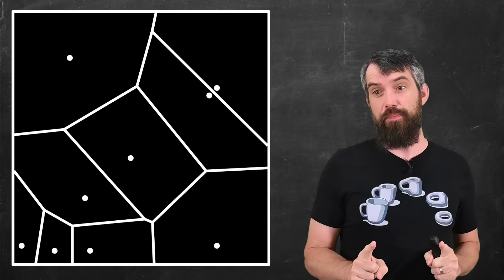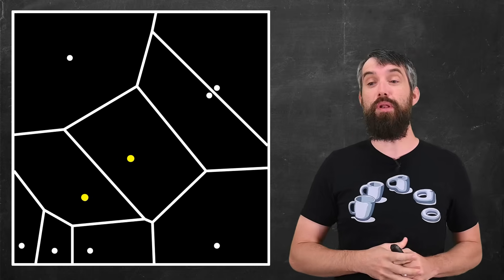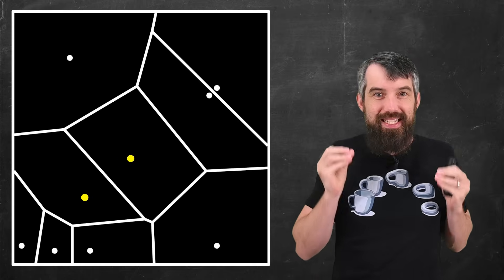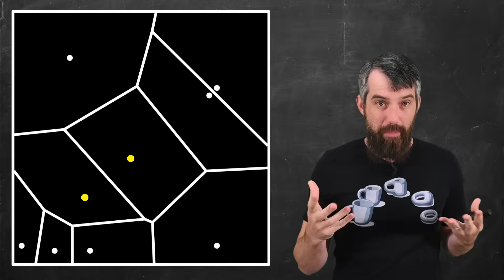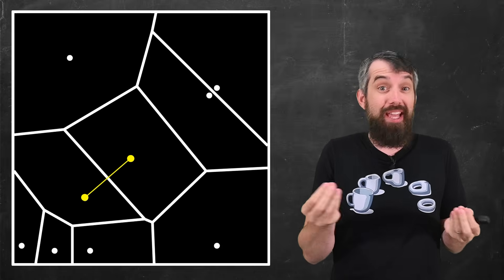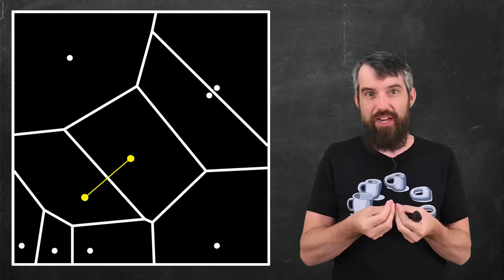But let's be a bit more precise. If I focus on just a couple of those points, what is the line exactly that's occurring between them? The big idea is these points are equal distance to this central line.